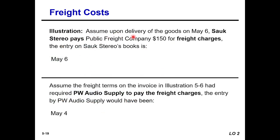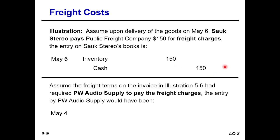Freight cost example: assume delivery of goods on May 6. Sauk Stereo pays the public freight company $150 for freight charges. The journal entry on Sauk Stereo's books: Inventory is debited and Cash is credited for $150.